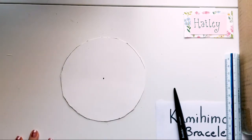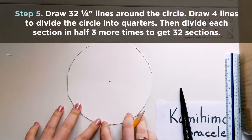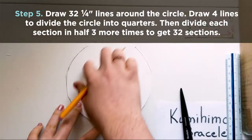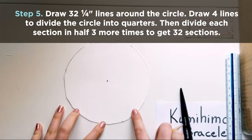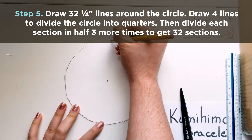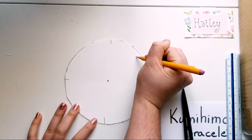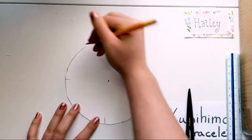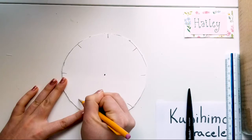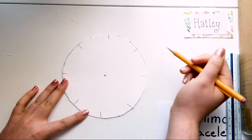So now we need to create 32 cuts along the edge of the circle. I start out by going the four corners, and then I'll divide that in half. And again, it doesn't need to be perfect, just do your best. So that's eight.